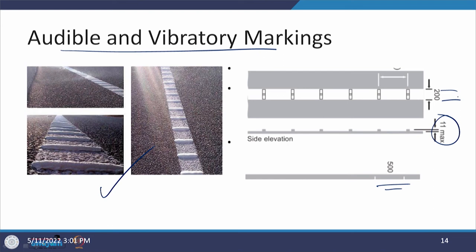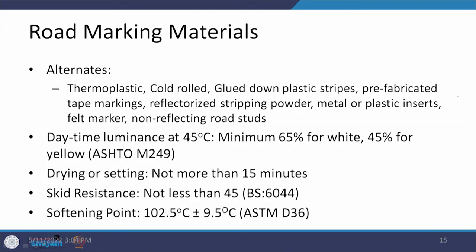Now it is important to talk about the materials used to create these markings. Different alternatives are available: thermoplastic, cold rolled, glued-down plastic strips or prefabricated tape markings, refractorized stripping powder fixed by thermal conditions, metal or plastic inserts, felt markers, and non-reflecting road studs. Whatever material is used, certain specifications must be followed.